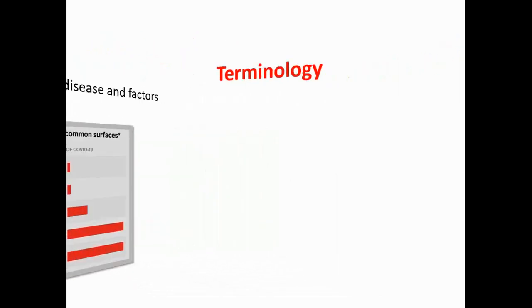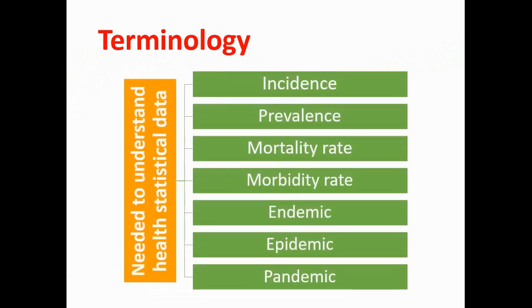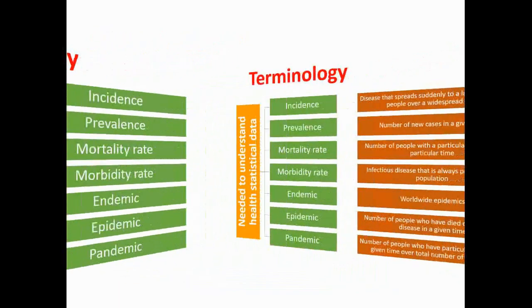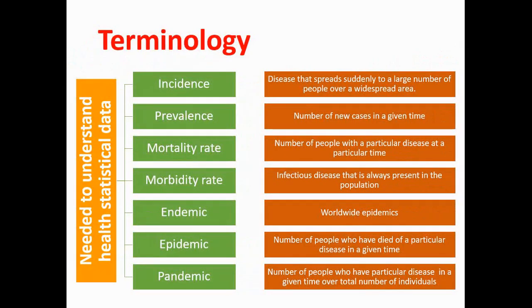Now we come to some important terminology needed to understand health statistical data. I'm sure that if not all, but some of them are familiar to you: incidence, prevalence, mortality rate, morbidity rate, endemic, epidemic, pandemic. So at least the words like incidence, mortal, epidemic, I think should be familiar to you. Now please try to match the terms with their definitions, and let me give you some time to do it.